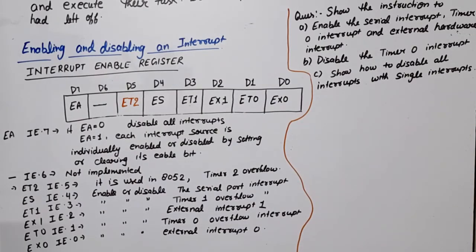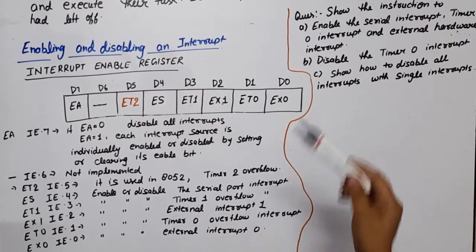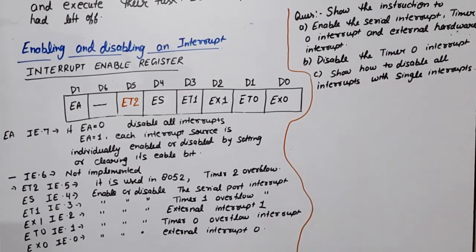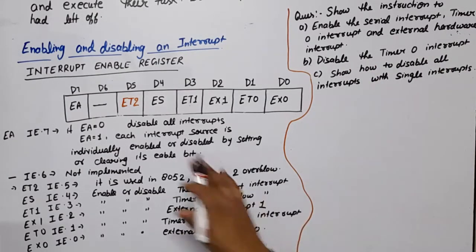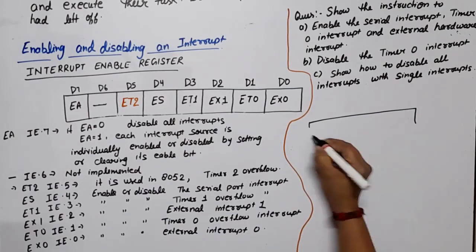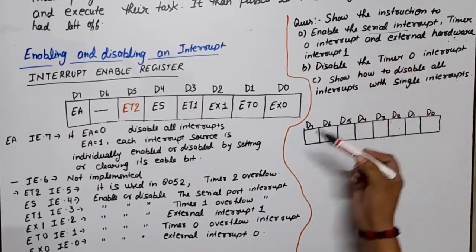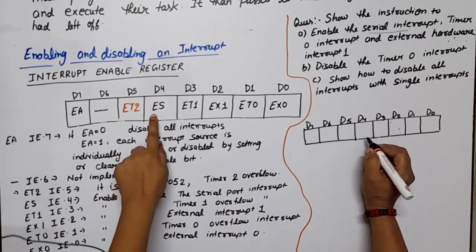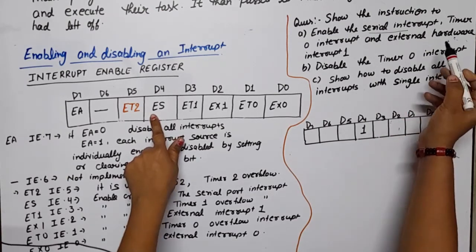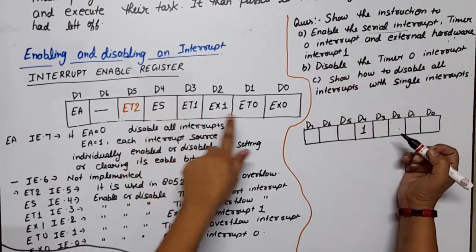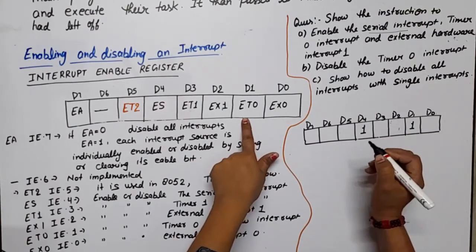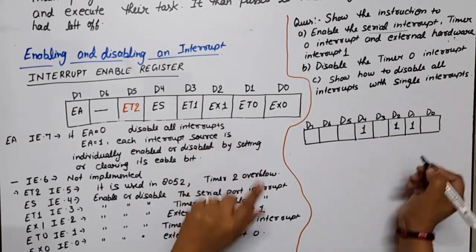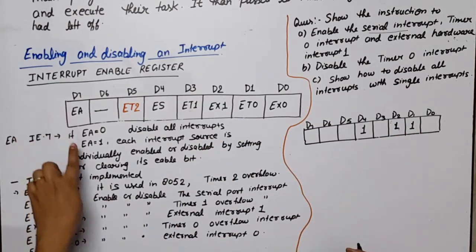Now let's look at an example question: write the instruction to enable the serial interrupt, timer 0 interrupt, and external hardware interrupt 0. To enable the serial interrupt, D4 must be 1. For timer 0 interrupt, D1 must be 1. For external hardware interrupt 0, D0 must be 1. All of these work only when D7 (EA) equals 1.